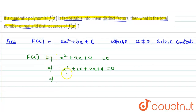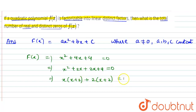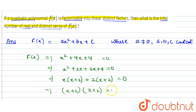To find out the value of x: from the first two terms we take x common, giving (x + 2); from the next two terms we take 2 common, giving (x + 2). From both terms we take (x + 2) common, so we have (x + 2)(x + 2) = 0.